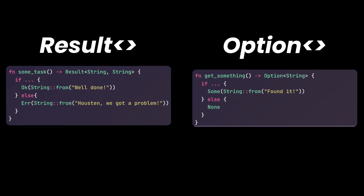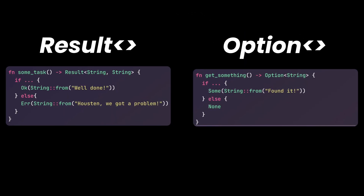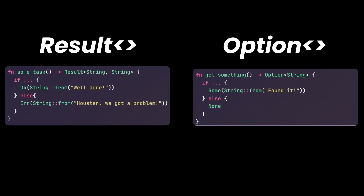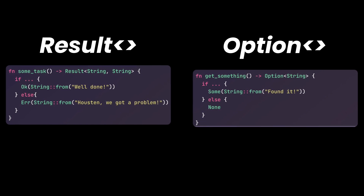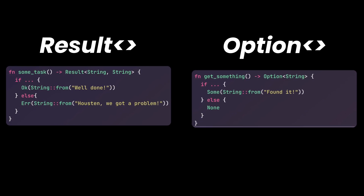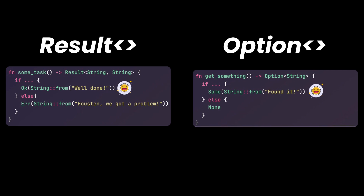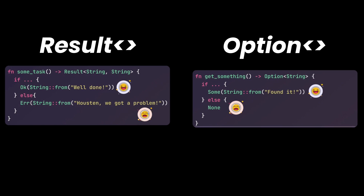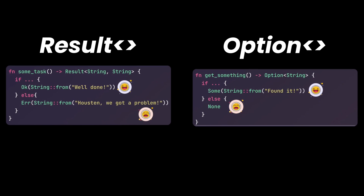Five: error handling with Result and Option. Rust takes error handling seriously, avoiding the need for exceptions. The Result and Option enums make error handling a first-class citizen in Rust. They enforce safe and predictable handling by making you deal with both the happy path and the potential error right at the site of the call.